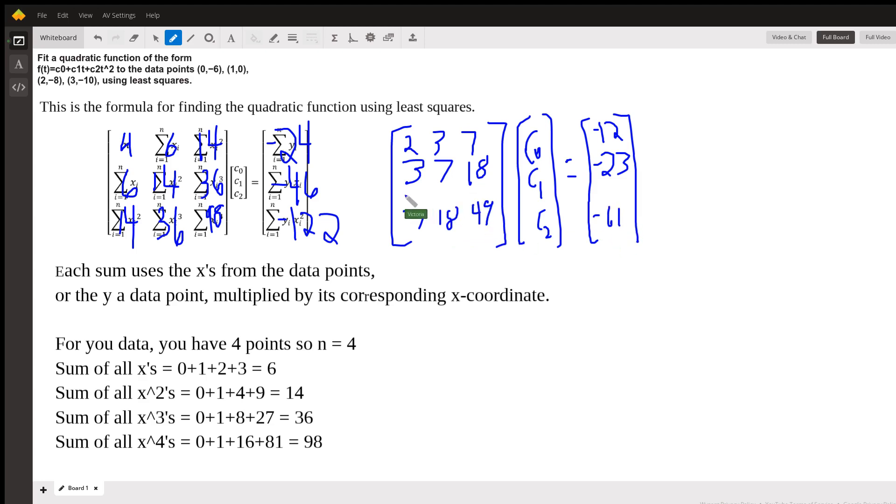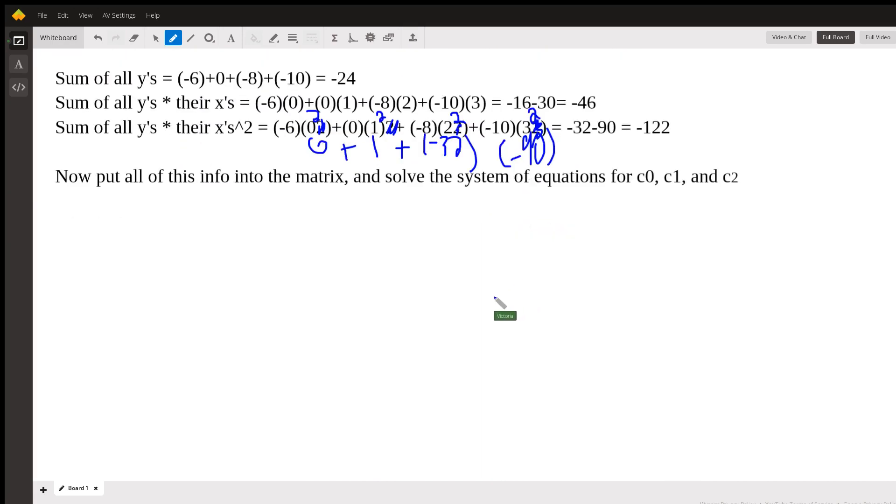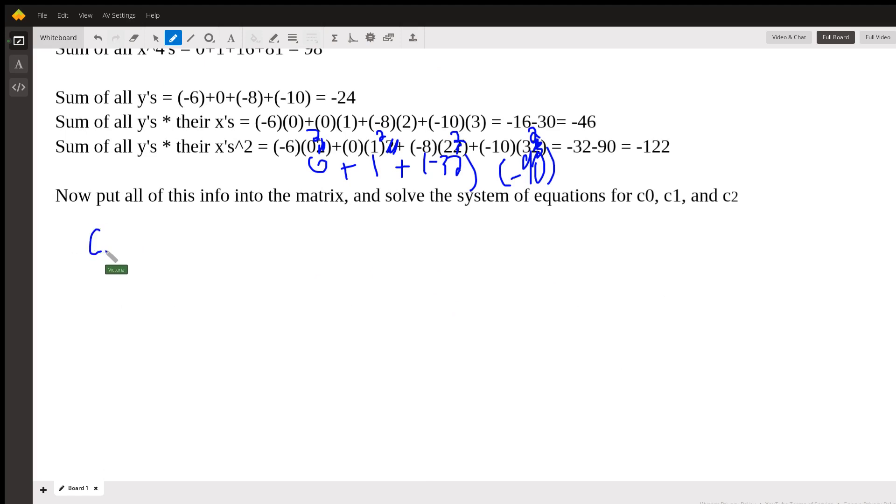And then if your teacher will let you, you can put that into your calculator's matrix solver, or solve the system of equation using matrices. And that will take a long time and lots of paper. But in the end you get that C0 is negative 5, while C1 becomes 4, and C2 is negative 2. And I verified this on my calculator's statistics menu. And these are the correct answers.